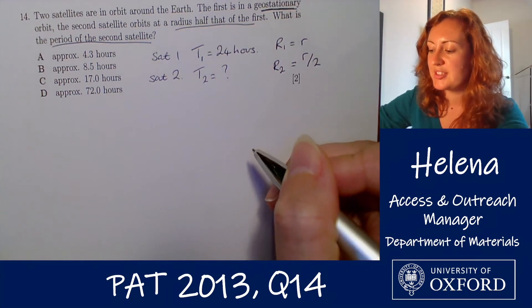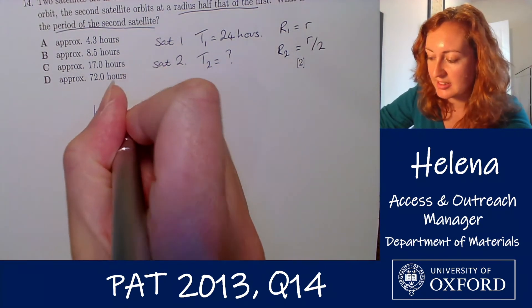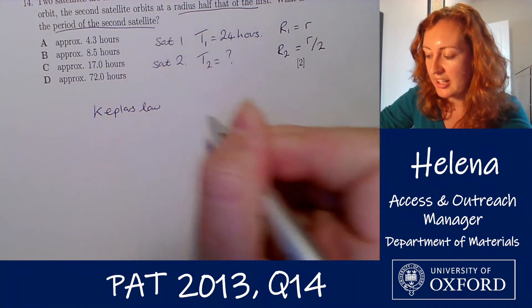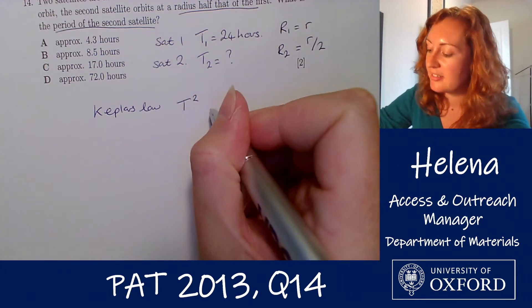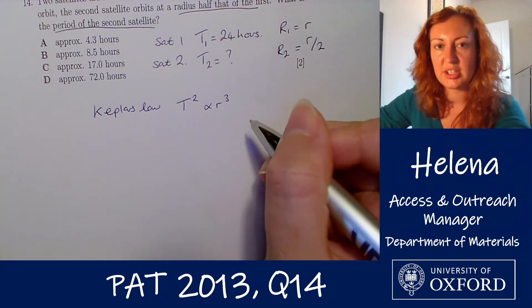Now in order to solve this question we can use Kepler's law. Now Kepler's law tells us that the orbital period squared is proportional to the orbital radius cubed.